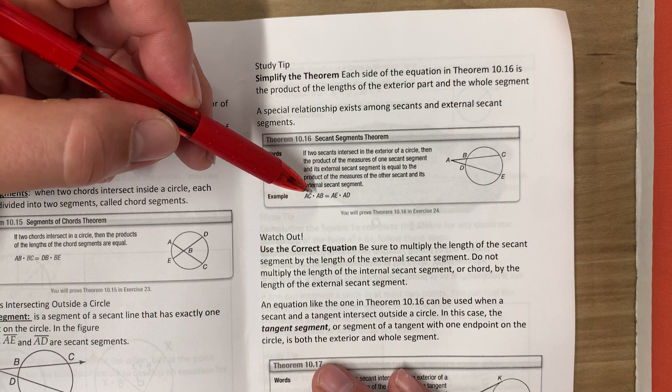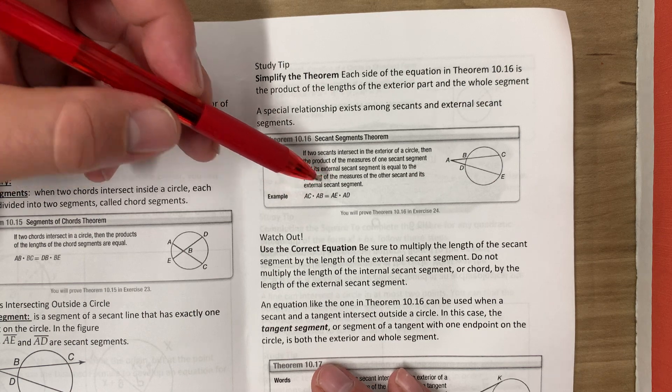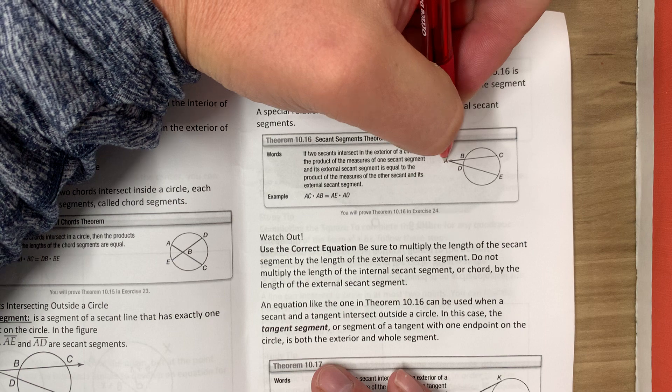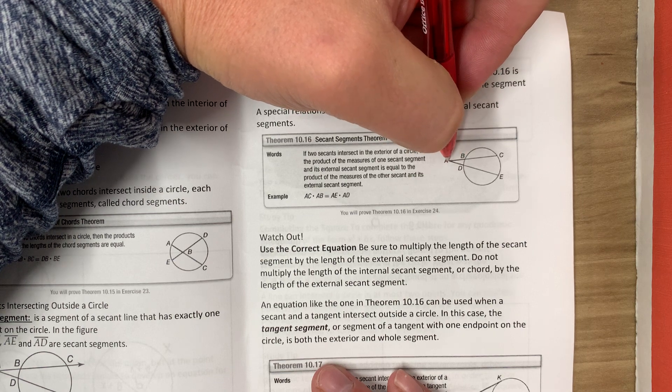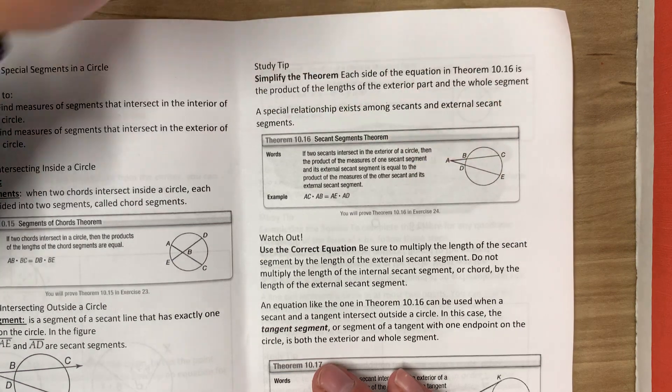So AC times AB would equal AE times AD. It really is just AC is the whole thing times the external, and then the whole thing times the external. They'll equal each other.